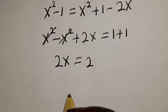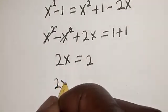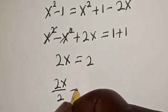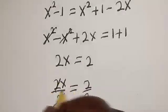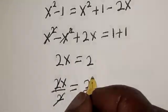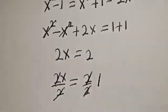Let's divide both sides by 2. 2x divided by 2 equals 2 divided by 1. So this will cancel, giving us x equals 1.